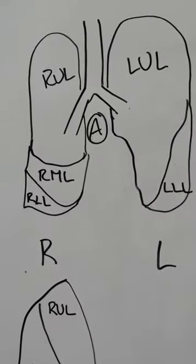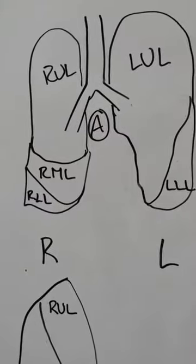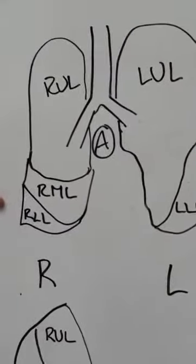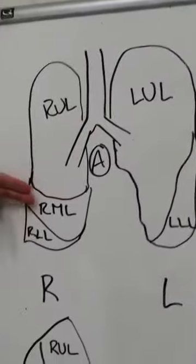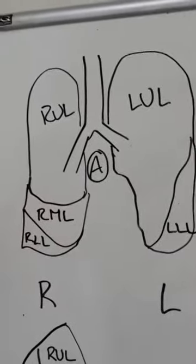When you are looking from the anterior approach on the patient, on the right hand side you're going to have three segments and ten bronchopulmonary segments with the right upper lobe, the right middle lobe, and the right lower lobe.